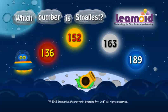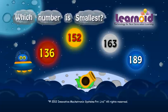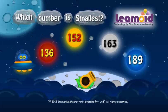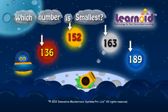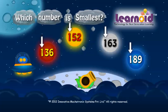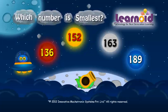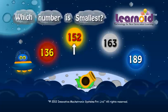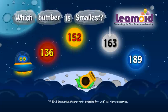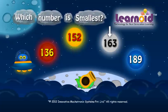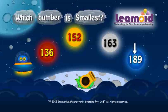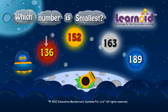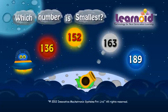Which number is smallest: 136, 152, 163, or 189? The first digit in all the numbers is the same, so let's check the second digit. It is 3 in 136, 5 in 152, 6 in 163, and 8 in 189. Three is the smallest of all, so 136 is the smallest.